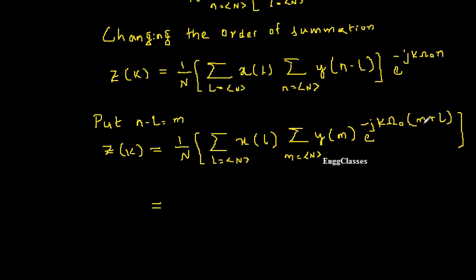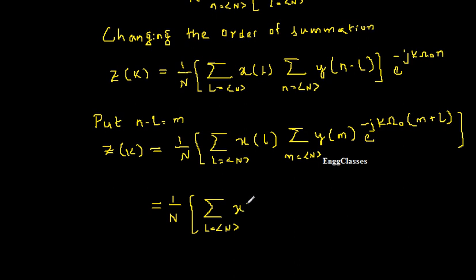Now I can simplify the exponential e to the power minus j·k·ω₀·(m+l) by splitting it as e to the power minus j·k·ω₀·l and e to the power minus j·k·ω₀·m. So one exponential term goes with x of l and the other goes with y of m, and these reduce to DTFS expressions again.